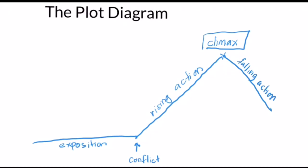The last plot is resolution, represented by a horizontal line. Similar to the exposition plot, the resolution is a plot where the conflict is solved — no more conflict, and that is why it is represented by a horizontal line. This is where viewers get to know how the conflict is solved by the protagonist, and they can see that the protagonist's life returns to normal.